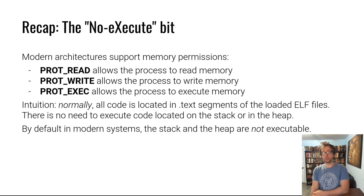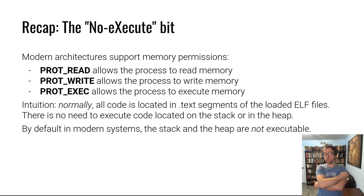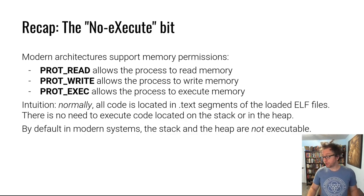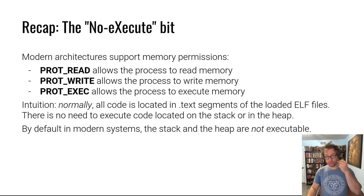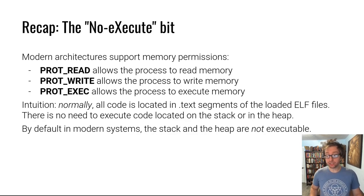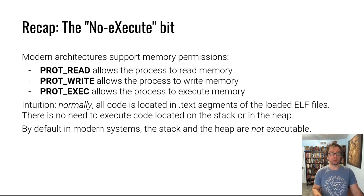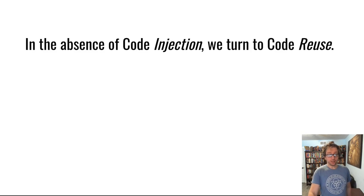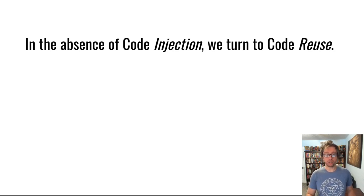The only real places outside of exotic embedded situations with small resource-constrained machines that might not have modern data execution prevention — and even then, most things do — are just-in-time compilation engines, which you have now in the combination module also exploited. But those are situational. What if you're looking to break the security of something that is not a just-in-time compilation system? If you are unable to inject code and execute it, then we turn to what is called code reuse.